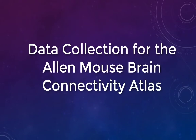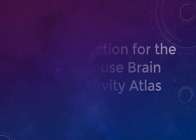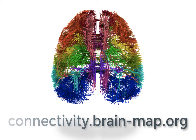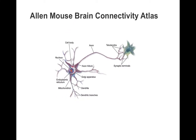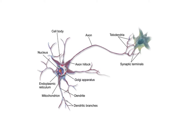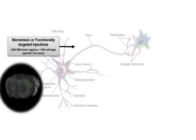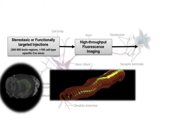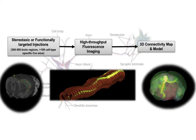This brief tutorial will walk through the methods used to collect the neuronal projection data from the Allen Mouse Brain Connectivity Atlas, located at connectivity.brain-map.org. The Allen Mouse Brain Connectivity Atlas is a map of long-range neuronal projections in the adult mouse brain. To obtain these data, mice were injected with a recombinant AAV virus targeted either stereotaxically or functionally. The virus delivered a message to infected cells to produce green fluorescent protein throughout the extent of the cell, effectively labeling cells in an anterograde fashion. High-throughput sectioning and imaging was performed and these data were registered into the common coordinate framework. I'll walk through each of these steps in more detail.